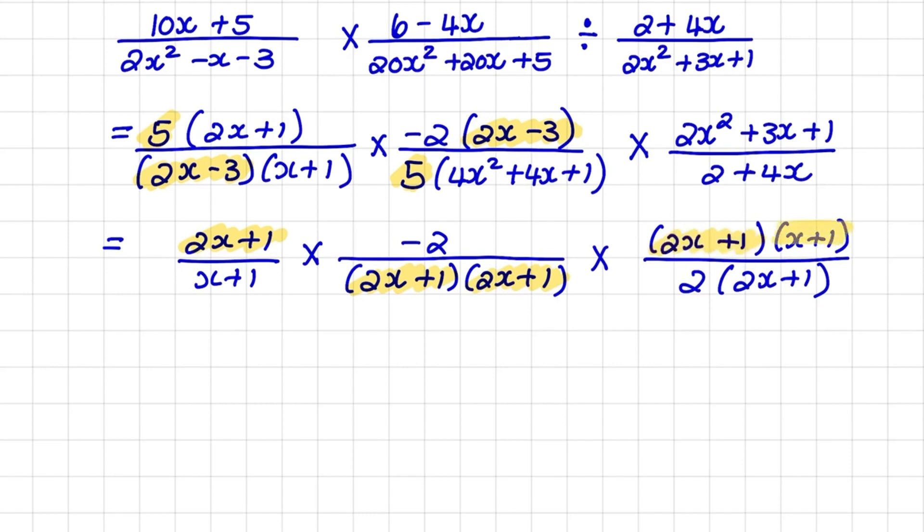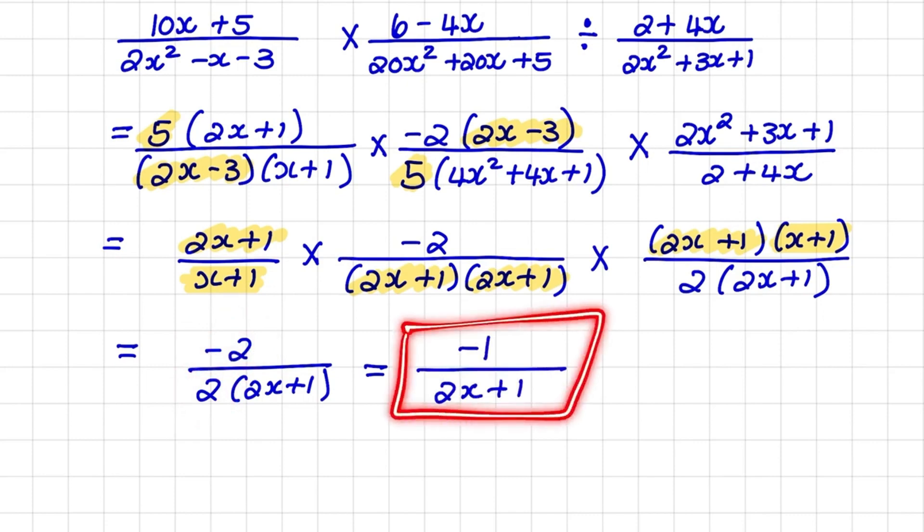So when I simplify, I have negative 2 over 2 times 2x plus 1. And negative 2 divided by 2 would lead to negative 1 over 2x plus 1. And that is my final answer.